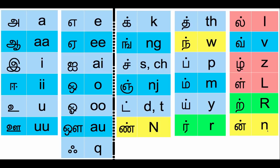In green, we have the R sounds — small R and capital R. And then the L sounds in red. So IL is small L, then we have capital L, and then Z.